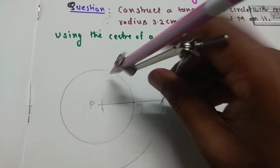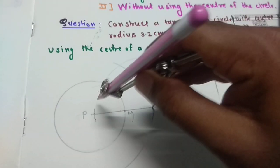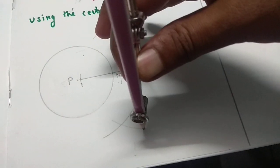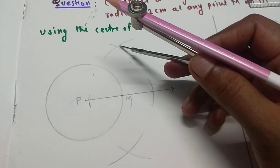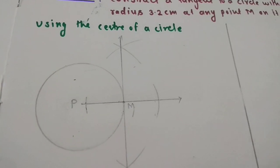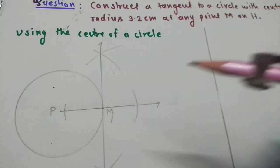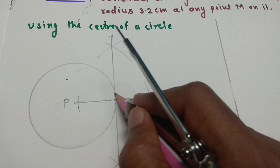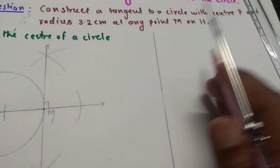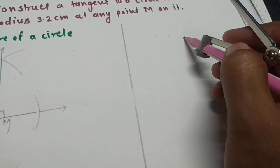Now join these two arcs. See, here this is our tangent of a circle. And now we can draw tangent without using center of a circle.